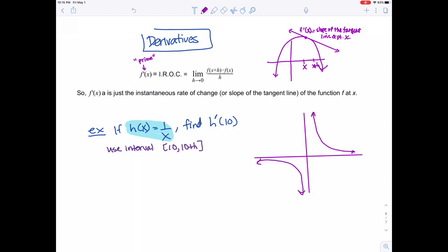They're asking me to find h prime of 10. Prime is that instantaneous rate of change - that's a tangent line. They want me to find the slope of that tangent line at 10. That's what it's asking. h prime of 10 is just the instantaneous rate of change or the tangent line at 10. Now we'll do the algebra.